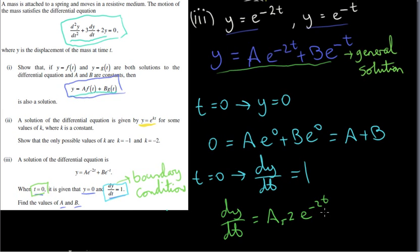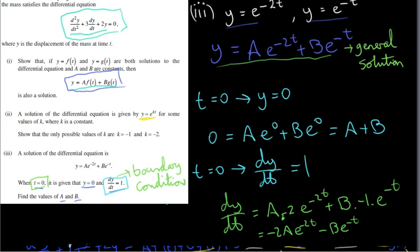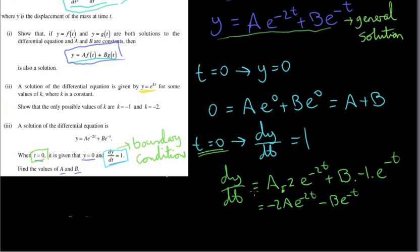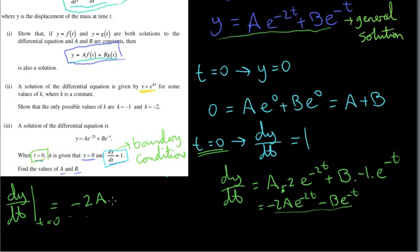We have to differentiate the general solution: dy/dt = a times (-2)·e^(-2t) plus b times (-1)·e^(-t), which simplifies to -2a·e^(-2t) - b·e^(-t). We need the derivative when t = 0. Replacing t with 0 gives e^0 = 1, so we get -2a·(1) - b·(1). We're given that derivative equals 1, so -2a - b = 1.